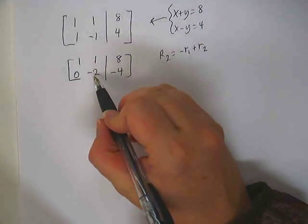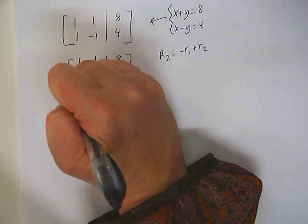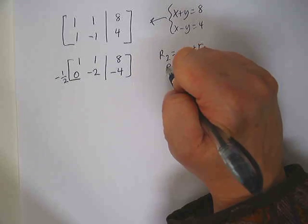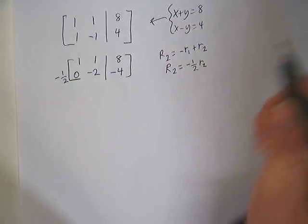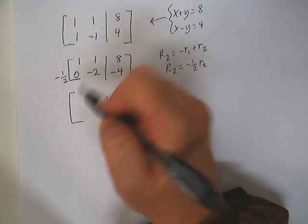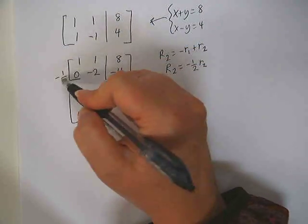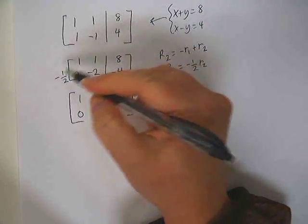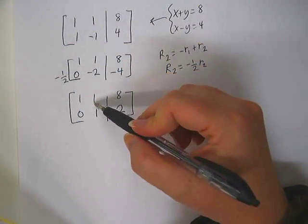Top row stays exactly the same. Now we want to turn that into a 1. So we're going to multiply by a negative 1 half. So, in other words, our row 2 is going to be negative 1 half times the old row 2. So, our top row stays the same. Negative 1 half times 0 is 0. Negative 1 half times negative 2 is a positive 1. Negative 1 half times negative 4 is a positive 2.